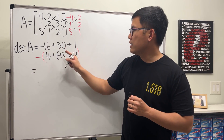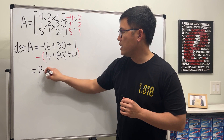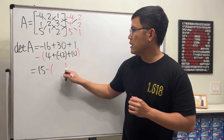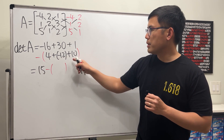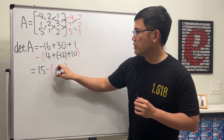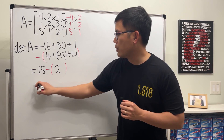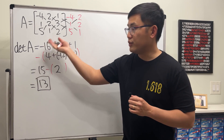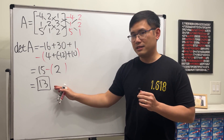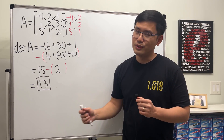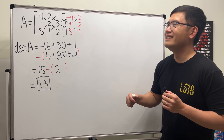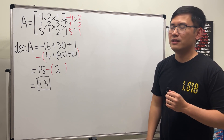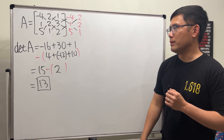So this right here is 14 plus 1 is 15, and then minus negative 8 plus 10 is 2, so we have 13 for the determinant. Because this is not equal to zero, I can show you the shortcut of finding the inverse of this 3x3 matrix.